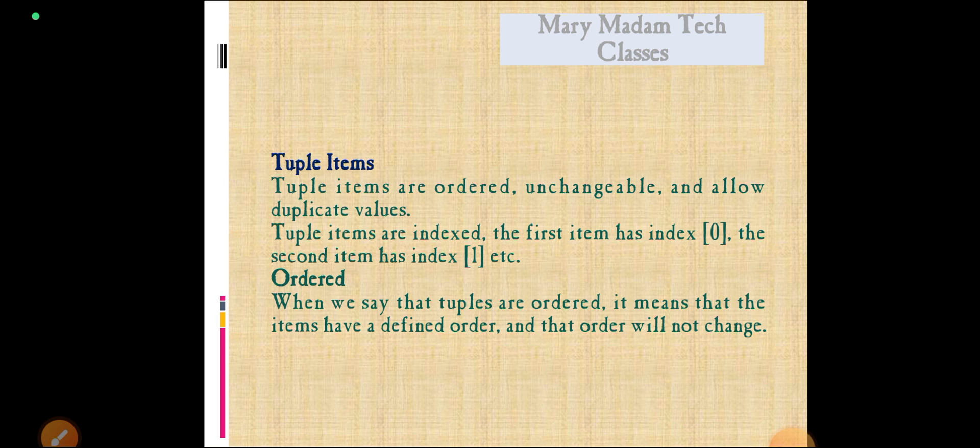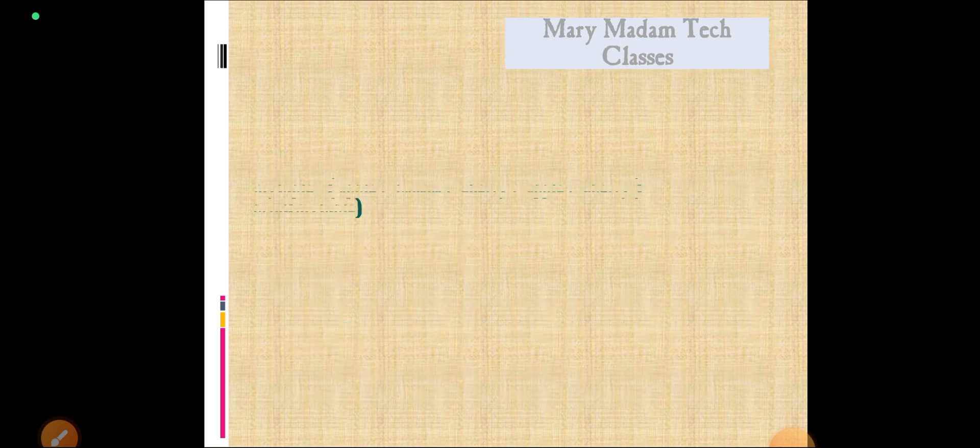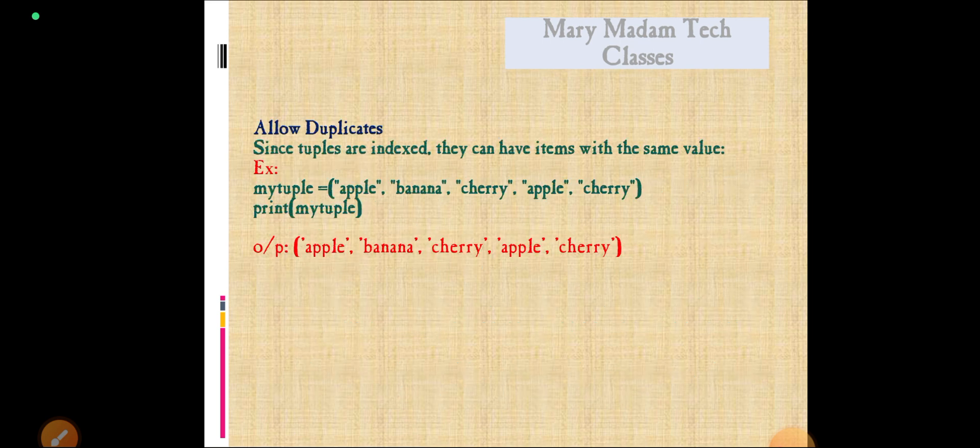These tuples are ordered. It means that items have a defined order and that order will not change. The tuples are unchangeable, meaning that we can't change, add, or remove items after the tuple has been created.